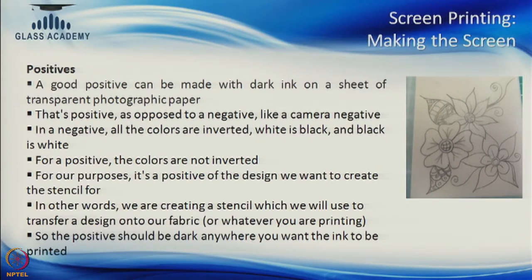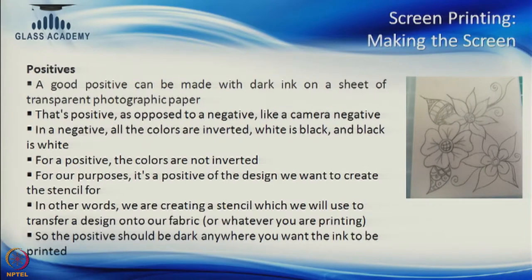The positive is different from a negative. A camera negative is where the colors are inverted; in this case it is not so. In a positive the colors are not inverted. Essentially, the dark portions are the ones which will block the light, and these are the areas where the ink will pass through. The area where you need the ink to pass through needs to be dark — that is why it is called a positive and not a negative.